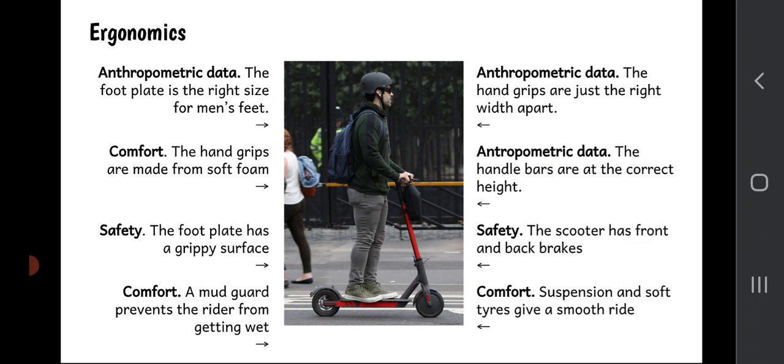So let's start at the top left and go down this. In terms of anthropometric data, the foot plate is exactly the right size for a man's foot. Next one down, comfort - the hand grips are made of soft foam. Then we're considering safety. The designers had to think about safety. The foot plate has got a grippy surface on it so that the rider doesn't come skidding off it. There's another comfort feature in the mudguard. The mudguard stops the back of this rider's trousers getting all muddy and wet.